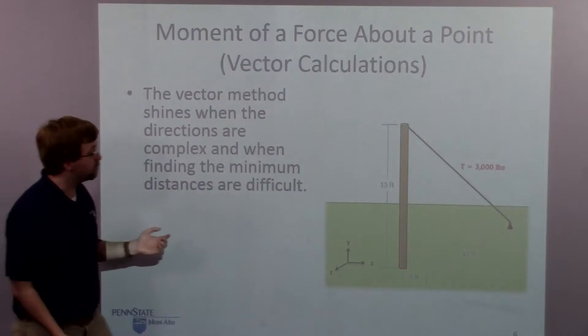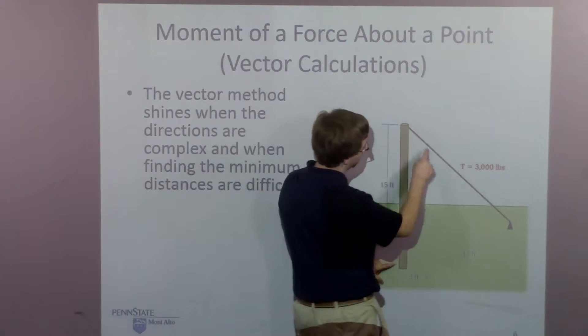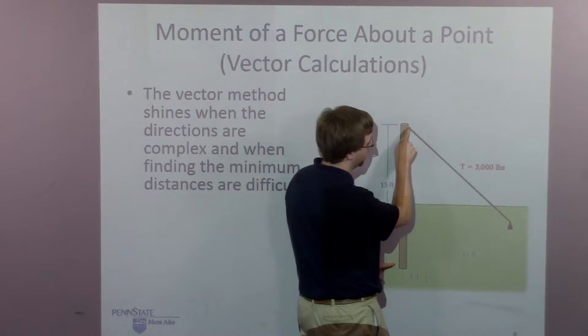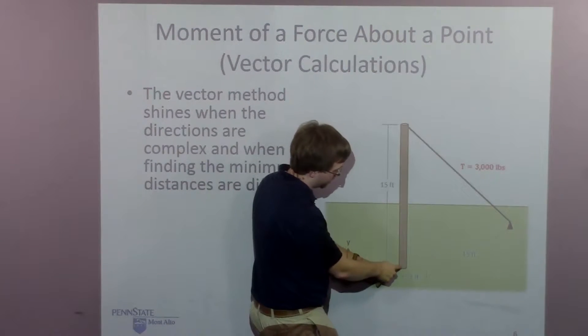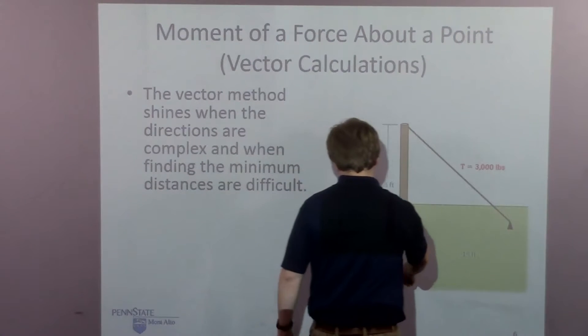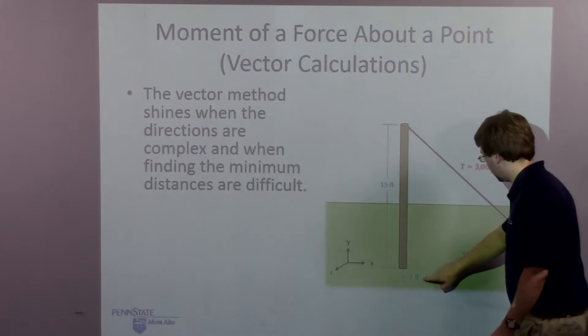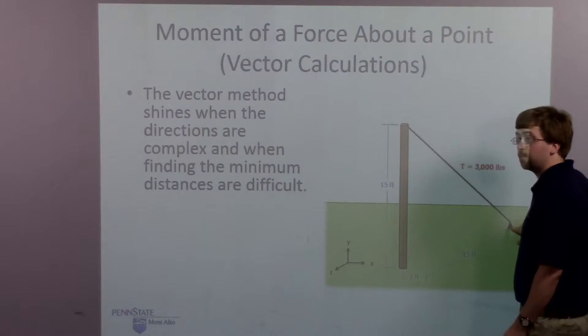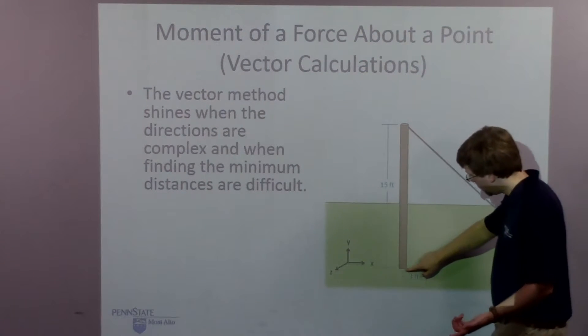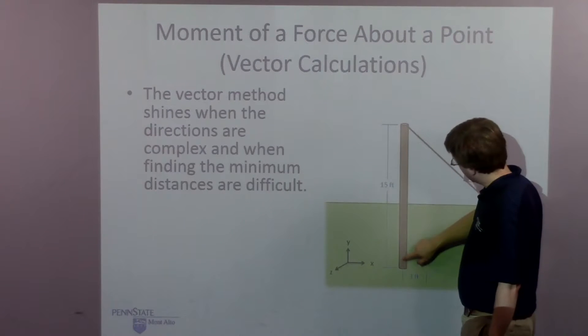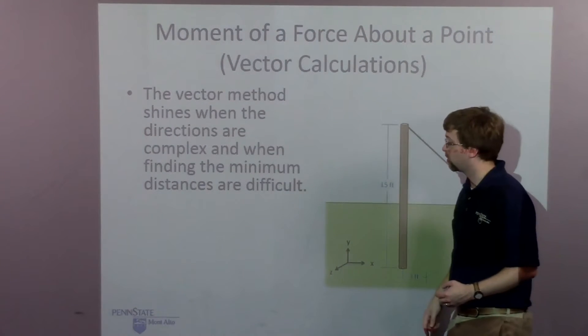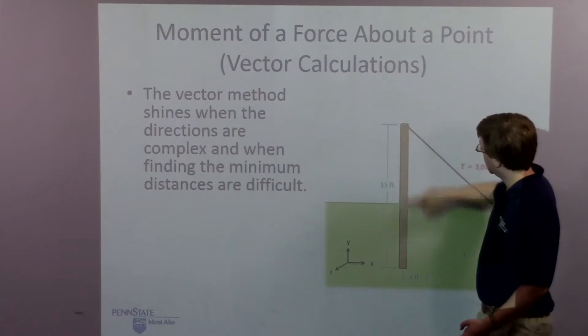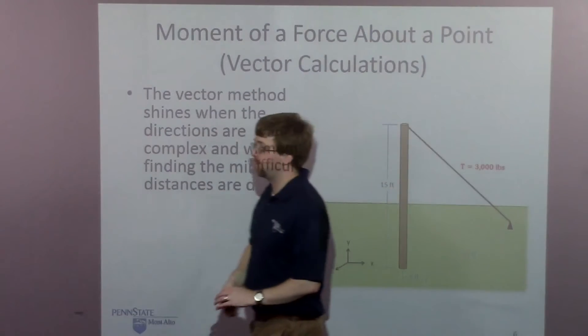But with the r cross f method, we can say this is my force, I still need to find the x, y, z component of that. But for the r vector, I can go 3 over in the x direction, and I go negative 15 in the z direction to get back to this point, or I also could just go positive 15 up to the top of the cable right here. Either one of those two directions is a valid r vector.